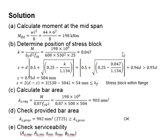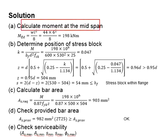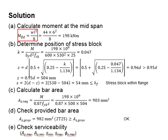The calculation steps are as follows. You need to calculate the moment acting on the simply supported beam at mid-span, using the equation M_ED = WL² / 8. The moment was found to be 198 kNm.